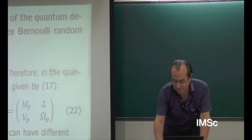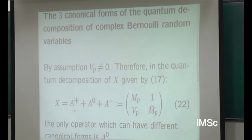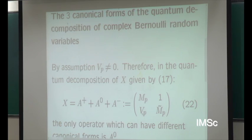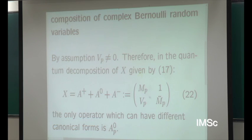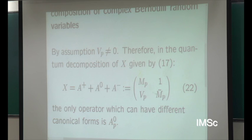Now we come to the main topic of this lecture: what is the origin of the Q deformation parameter? The quantum decomposition of the Bernoulli random variable is this matrix. The variance is always different from zero, and we want to look for canonical forms of this matrix. What can vary are the mean and the flipped mean. Correspondingly, we will have three canonical forms. The symmetric probability measures are characterized by the fact that in their quantum decomposition, the preservation operator is identically zero.